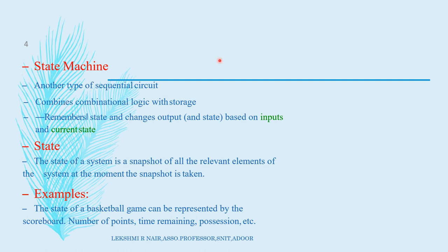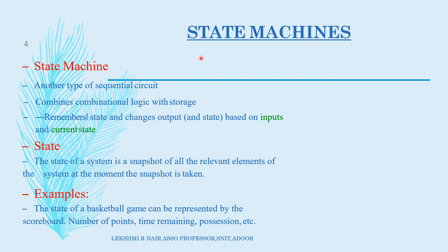Now, let's see what is the state machine. State machine is another type of sequential circuit. It is a combination of combinational logic and storage. It remembers states. It changes the output based on the input and the current state.